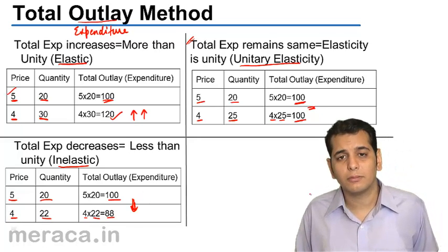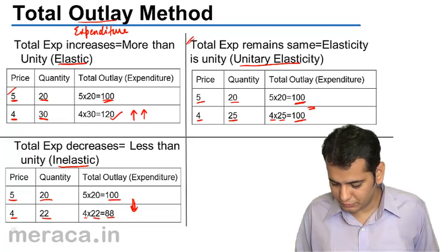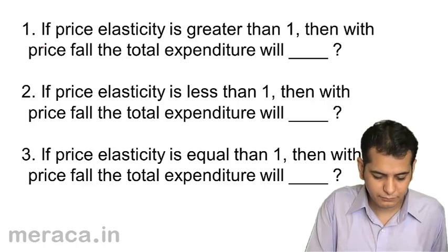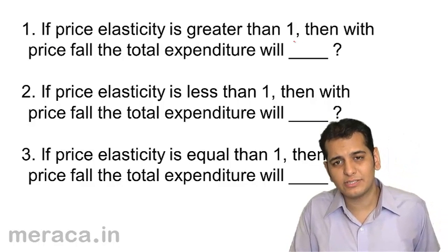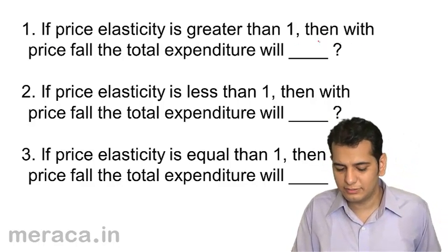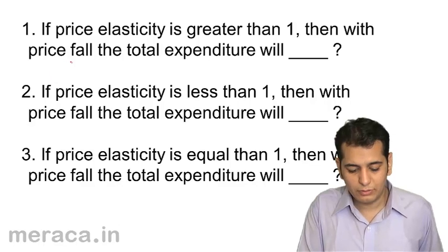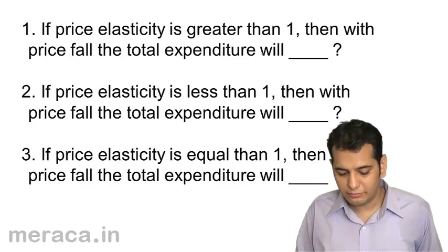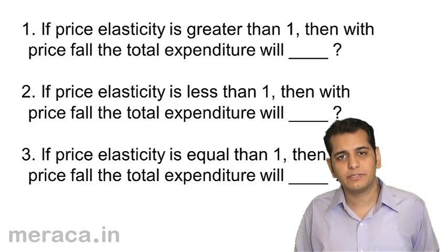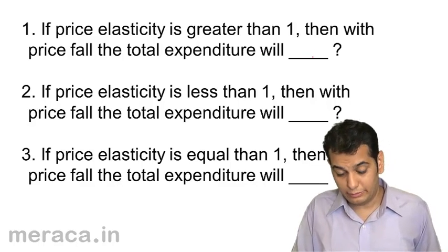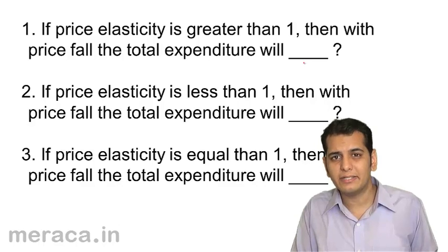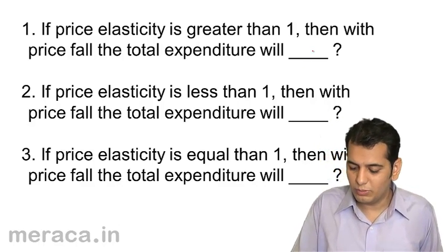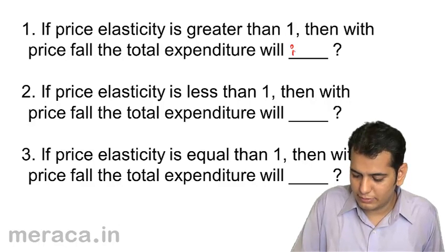Now let's try to solve a couple of problems on the Total Outlay Method. First: if price elasticity is greater than 1, then with a price fall, the total expenditure will — increase, decrease, or remain constant? The answer is: it will increase.